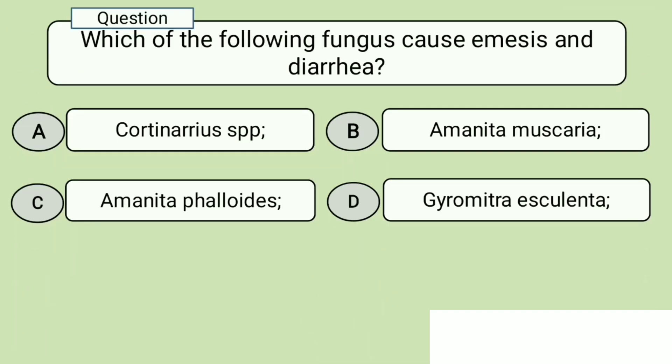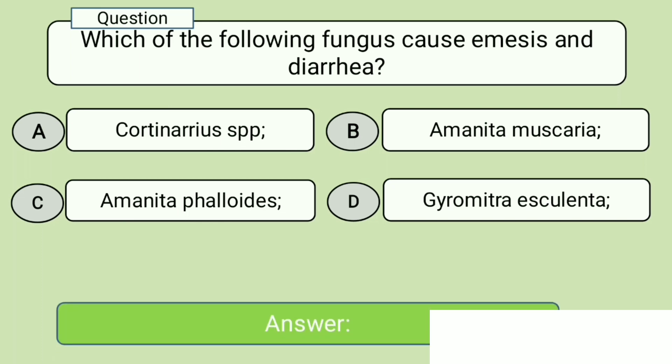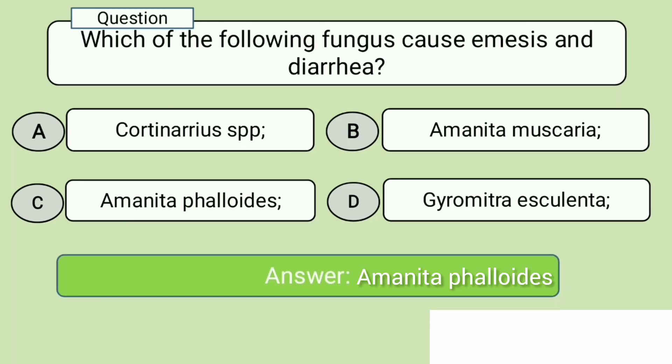Question 7. Which of the following fungus causes amnesia and diarrhea? A. Cortinarius SPP, B. Amanita muscaria, C. Amanita phalloides, D. Gyromitra esculenta. Answer: Amanita phalloides.